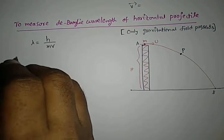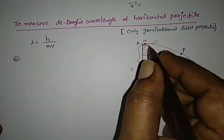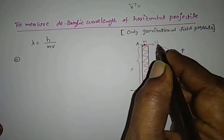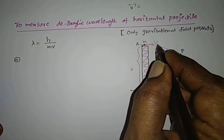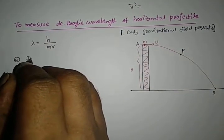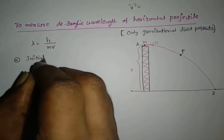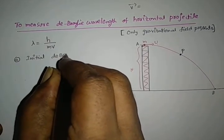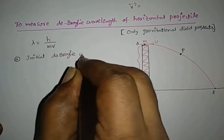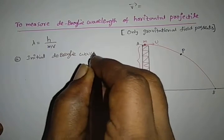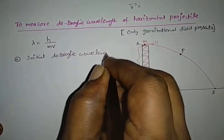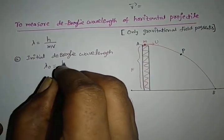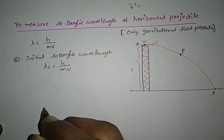At the point of projection, the velocity of the projectile is u. So its initial de Broglie wavelength, lambda naught, is equal to h by m u.